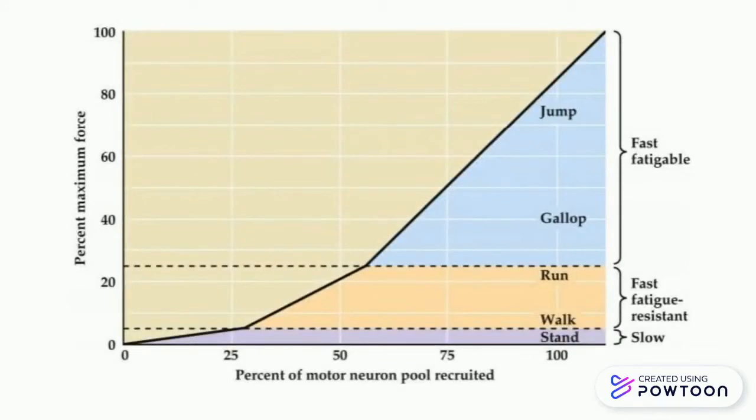Their activation depends on the amount of force required to produce a certain movement. So walking might activate only slow motor units, jogging might also activate fast fatigue-resistant units, and then sprinting would activate all three types of motor units.